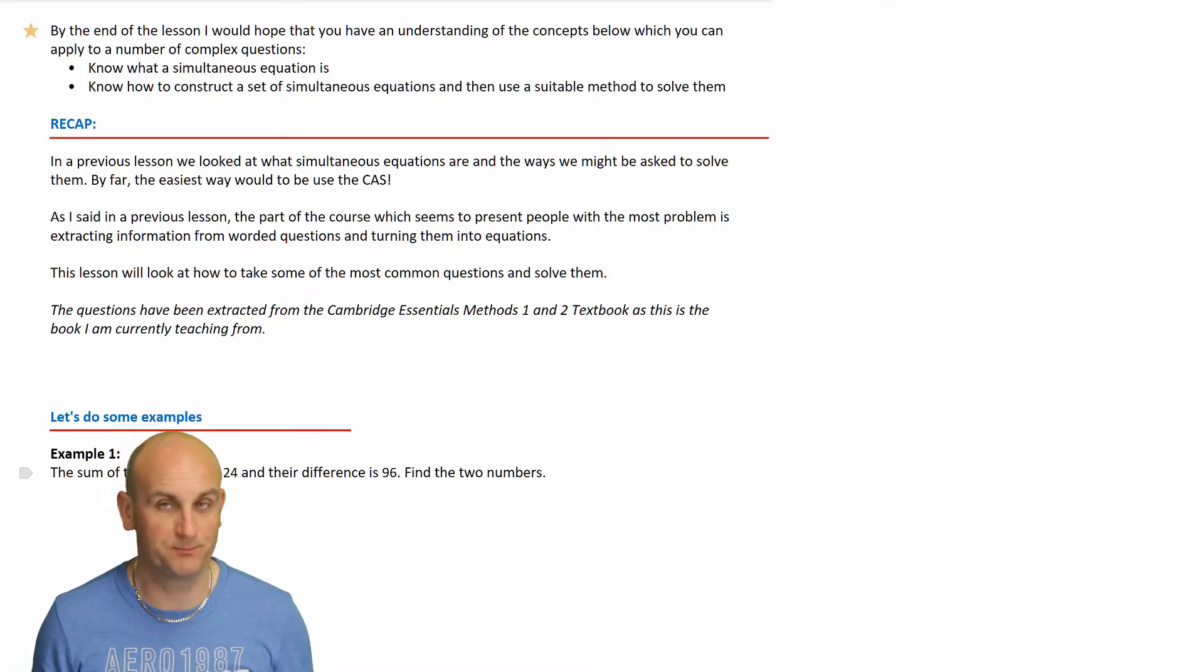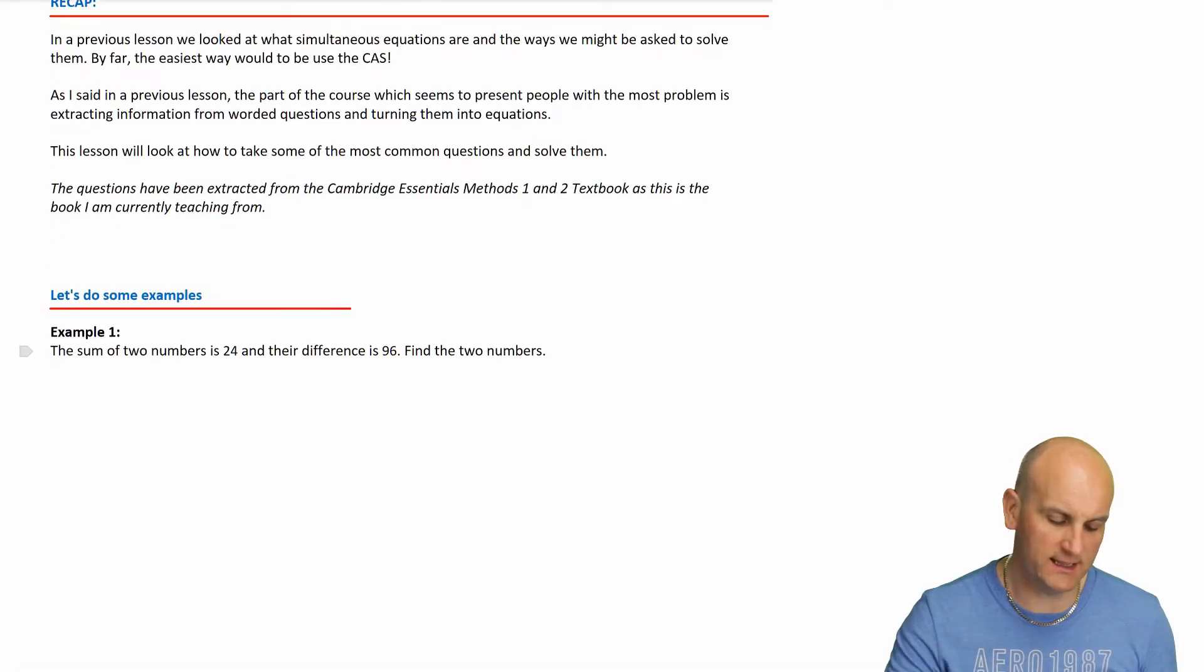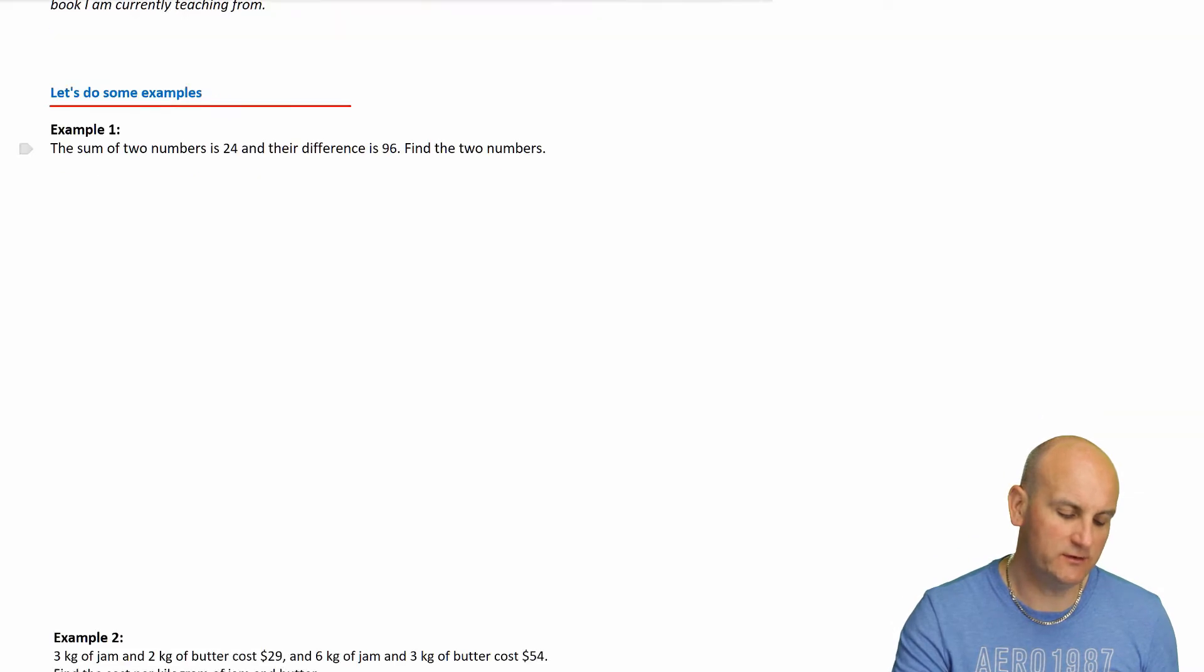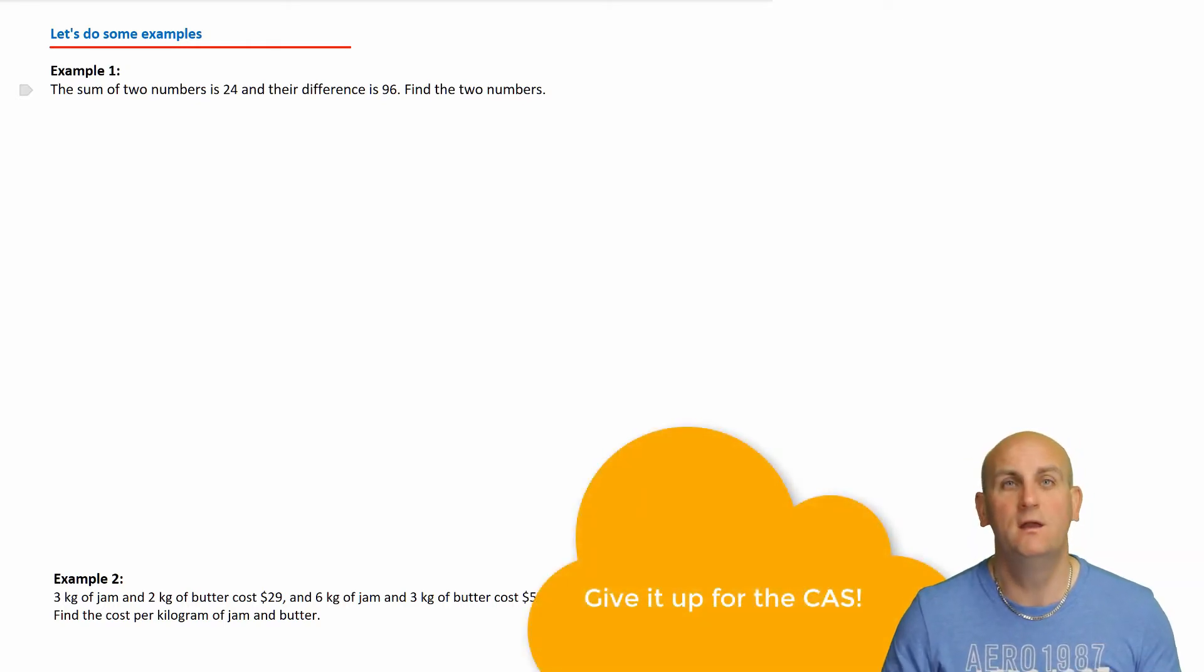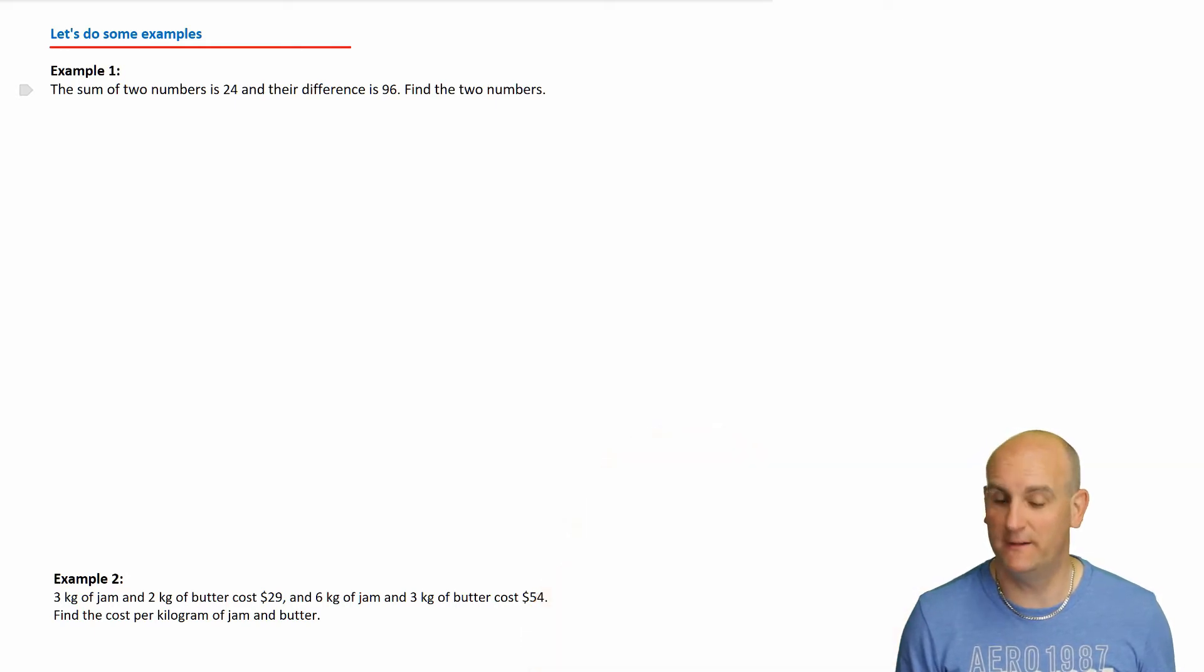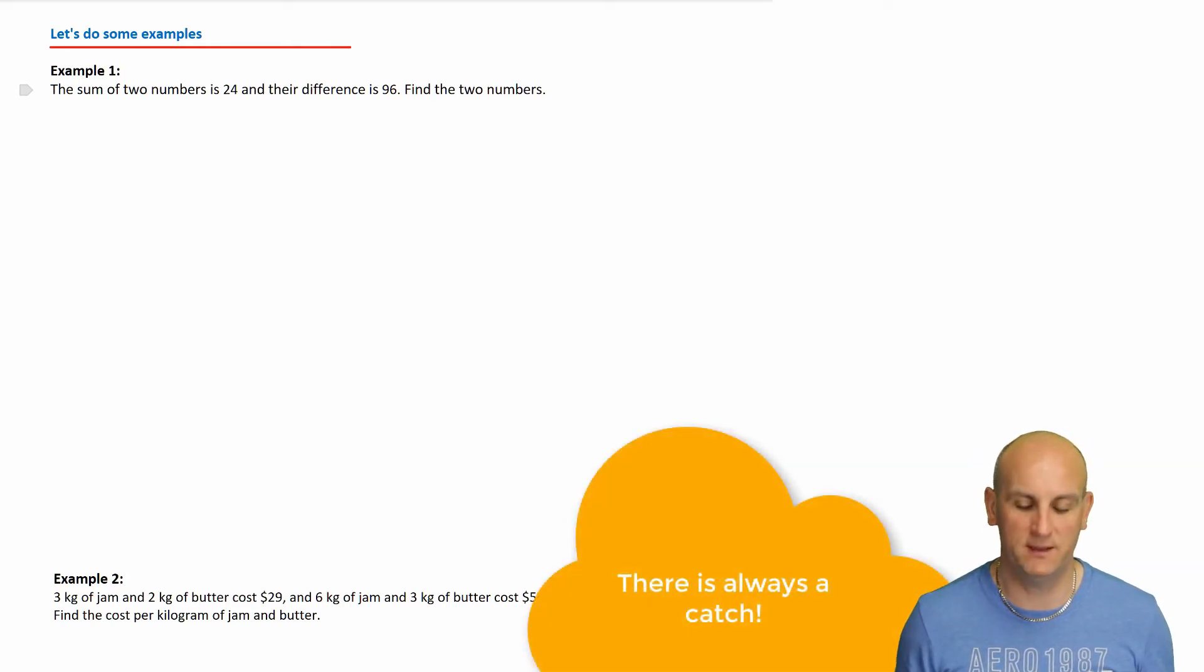Now by that we can mean elimination, substitution, graphically, CAS, or matrices, but matrices isn't in this course at this moment. Basically all of these questions you can still use your CAS because the methods one and two course is a CAS enabled course, which means you can use the calculator. But you can only use that calculator in a calculator enabled paper, so you still need to be able to do this by pen and paper.